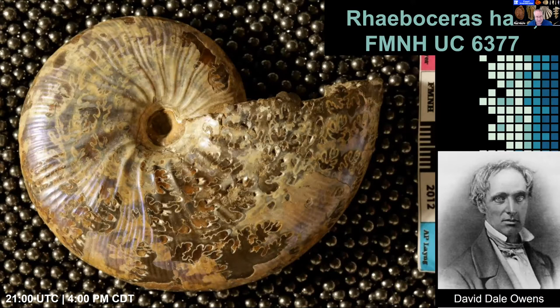The specimen attracted my attention not only because it's really pretty — you can just barely see some of the iridescent colors that play on this specimen with the original shell material, how it's translucent, and you can see the suture lines below — but also mainly because it was described in 1852 by David Dale Owen, 42 years before the Field Museum opened their doors. I looked up the reference: 'Report of a Geologic Survey of Wisconsin, Iowa, and Minnesota, and Incidentally of a Portion of Nebraska Territory,' made under instructions from the United States Treasury Department, Philadelphia, 1852.